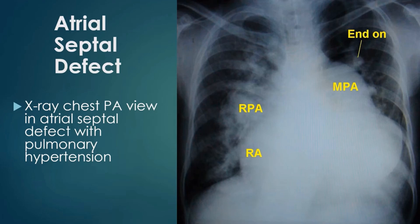All features suggest a large secundum atrial septal defect with a large left-to-right shunt producing severe pulmonary hypertension.